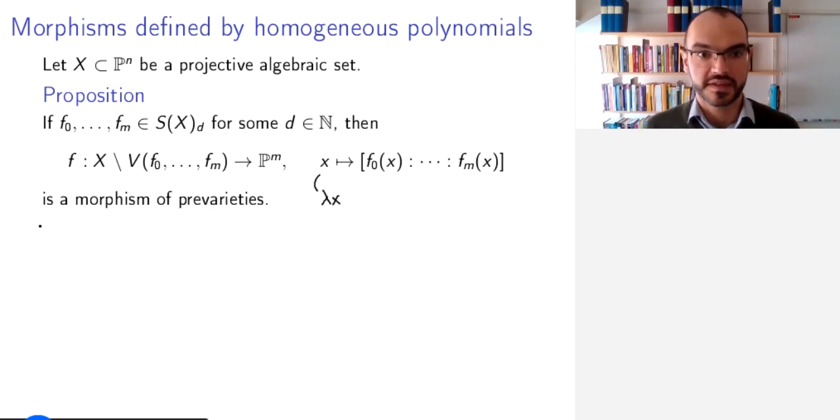And to show that this is a morphism, it is enough to show that it is a morphism on an open cover because of the gluing property of morphisms that you might want to go back and look at when we looked at pre-varieties. So because of the gluing property,